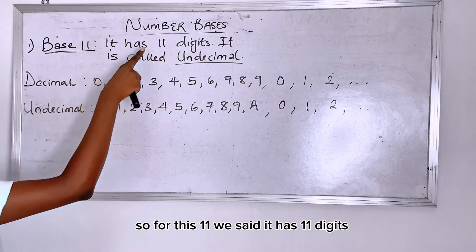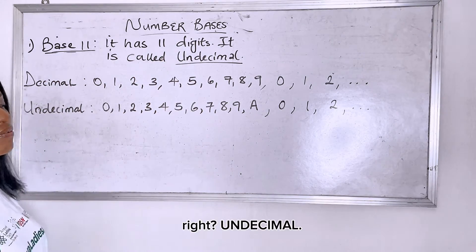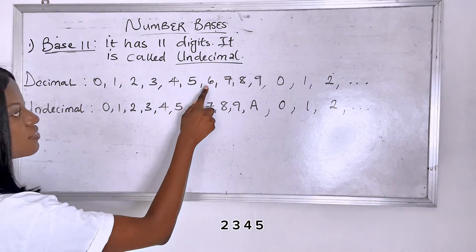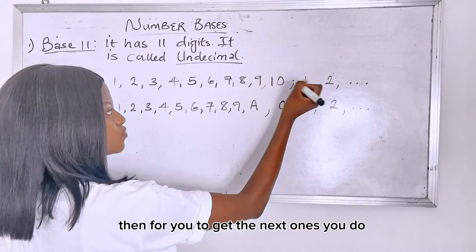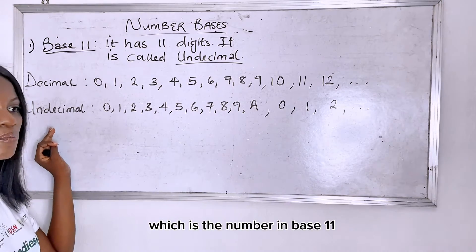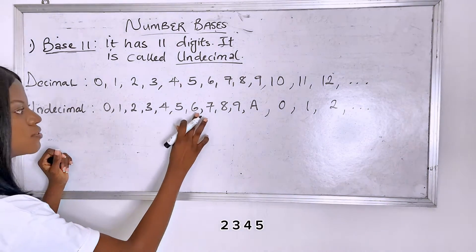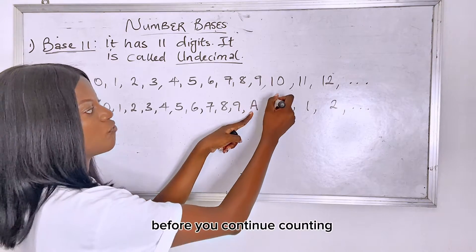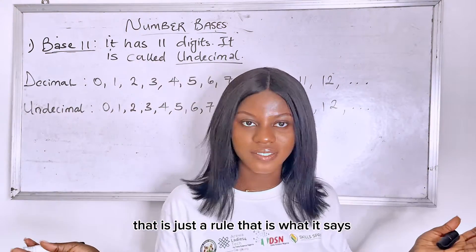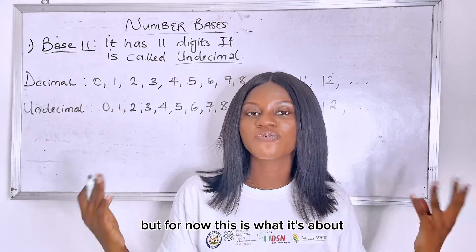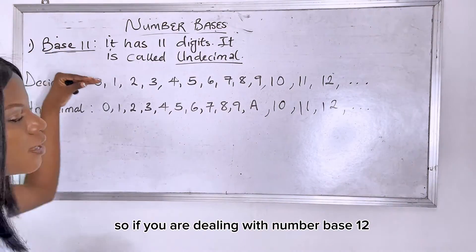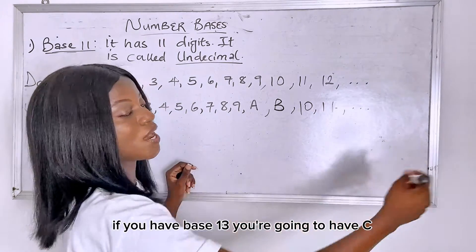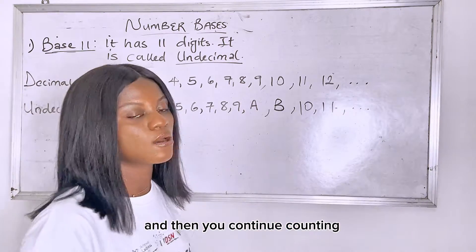Let's see. For base 11, we said it has 11 digits, and it can be called the undecimal. So remember for decimal numbers, which is your number in base 10, this is how we count it: 0, 1, 2, 3, 4, 5, 6, 7, 8, 9. Then for you to get the next ones, you do this. Now for undecimal, which is the number in base 11, you have 0, 1, 2, 3, 4, 5, 6, 7, 8, 9. But for you to get 10, you would not write 10 — you would have to put a letter before you continue counting. That is just a rule. So for base 12, we're going to have B, and of course we continue counting. If you have base 13, you're going to have C, and then you continue counting. That's just what the rule says.